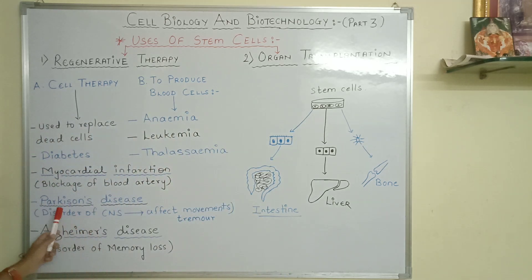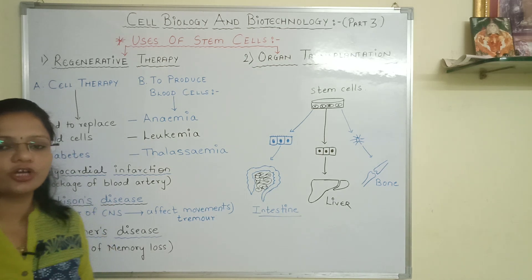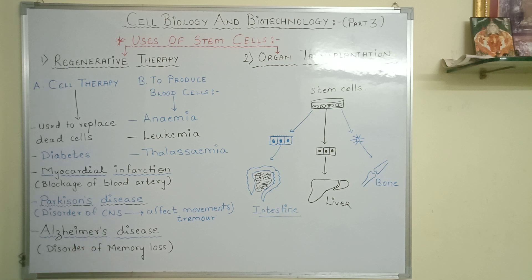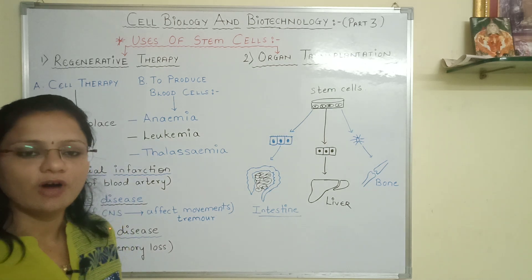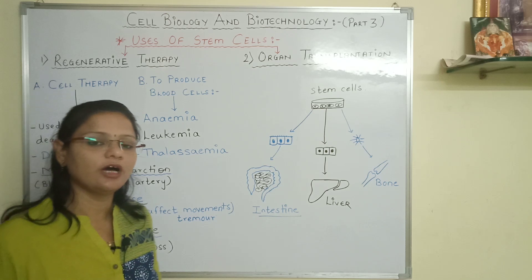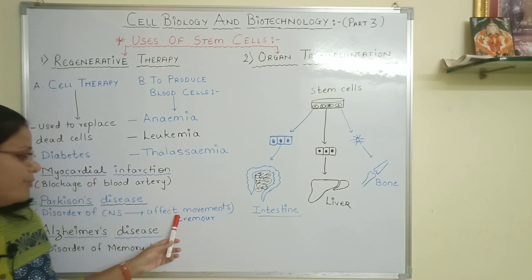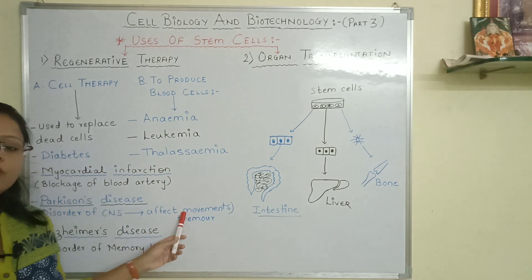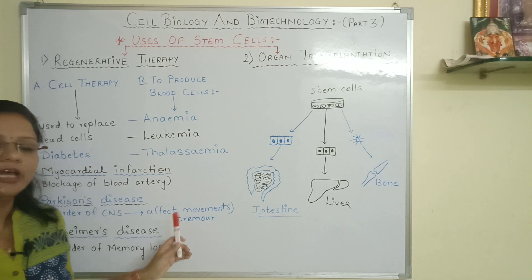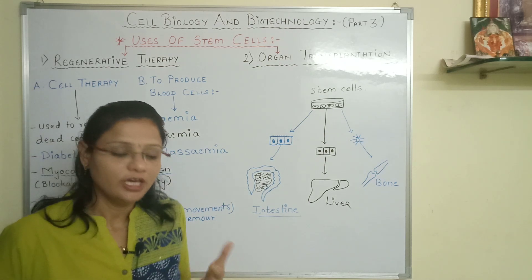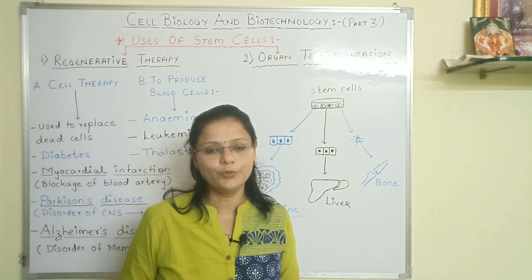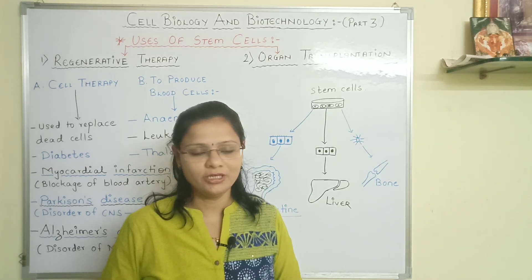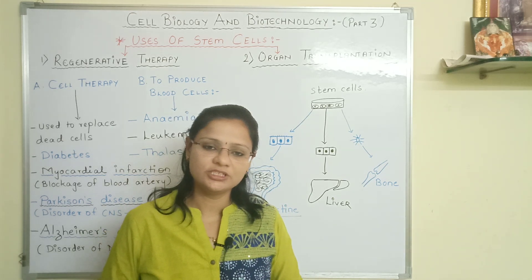Next is Parkinson's disease. What is Parkinson's disease? It is a disorder of the central nervous system — that is the brain, spinal cord, and nerves. The whole movement is affected, including tremors. The body shakes, control is lost, and movement is not in control. This is all part of Parkinson's disease.